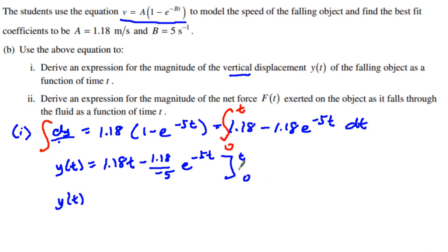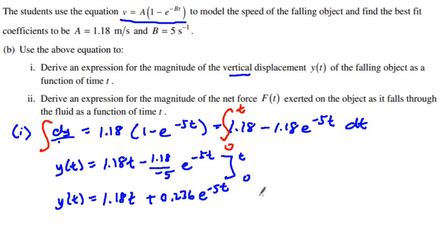Which means y as a function of t: I plug in t and get 1.18t. Then — actually it's plus, because the two minuses cancel out — I get 0.236 e^(−5t). That's using the upper limit t. Then we plug in 0: the 1.18 × 0 becomes 0, but e^0 equals 1, so we subtract 0.236.